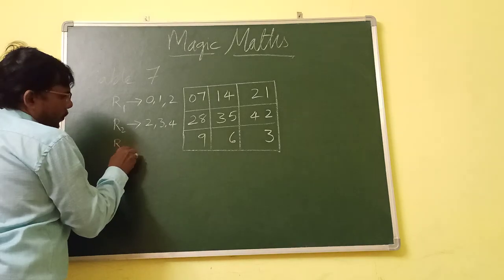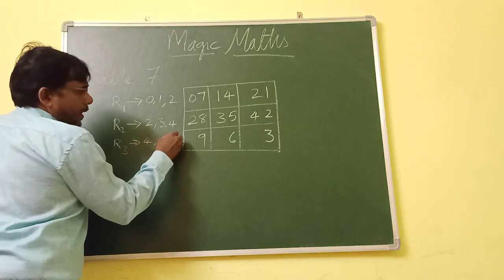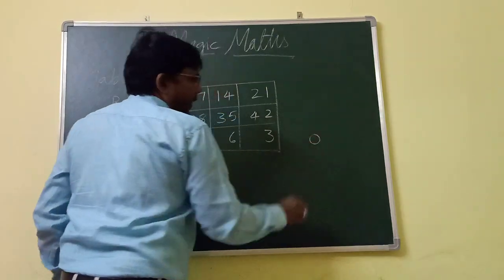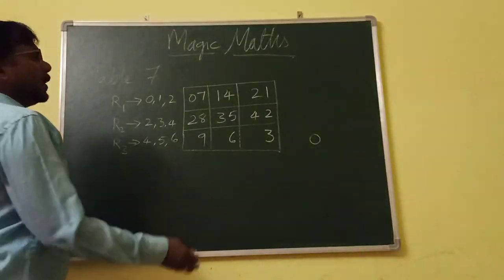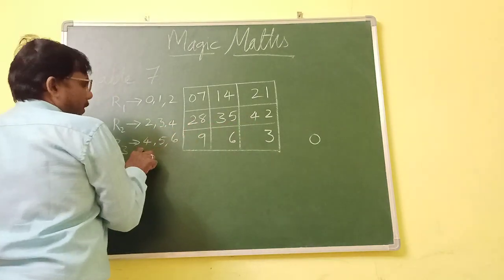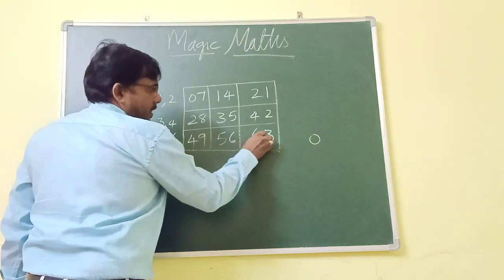Now in row 2, the magic numbers are 2, 3, 4. Now here is 2, 3, 4. In row 3, the magic number is 4, 5 and 6. Second row 2, 3, 4. And in third row, 4, 5, 6.